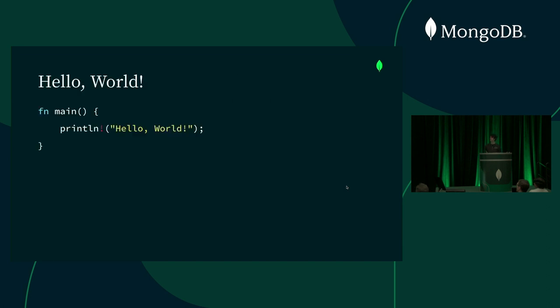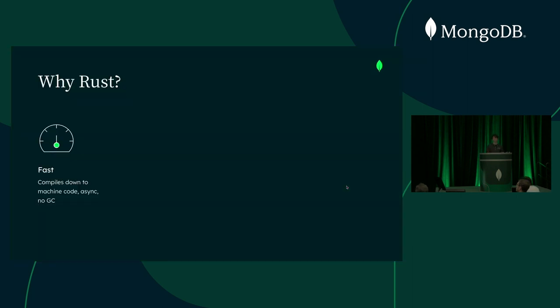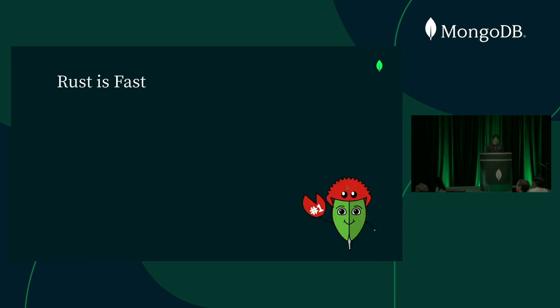Here's what some actual Rust code looks like. The syntax is intended to be familiar to C, C++, and Java developers, but it borrows a lot of much higher-level constructs from the functional programming world. So I've talked a bit about what Rust is and what it strives for. Let's move on to why you might want to use it for a MongoDB app. First and foremost, Rust applications are fast — one of the main reasons being that Rust applications can be compiled down to machine code.